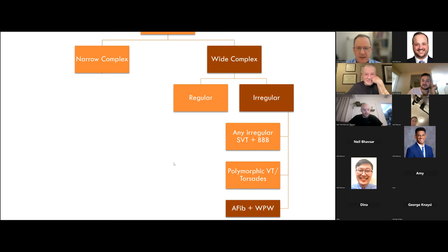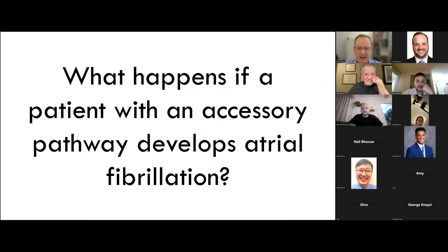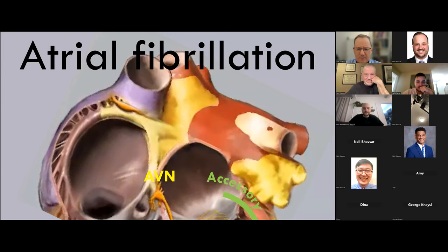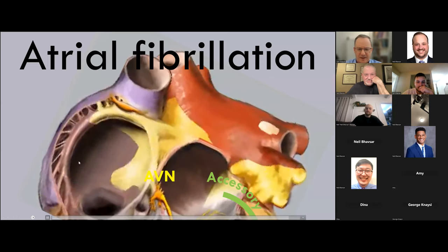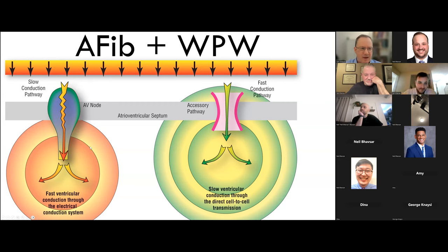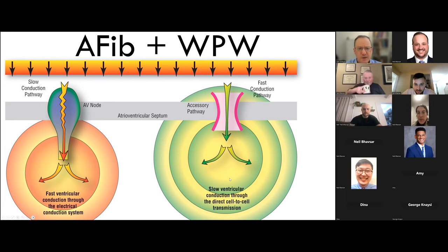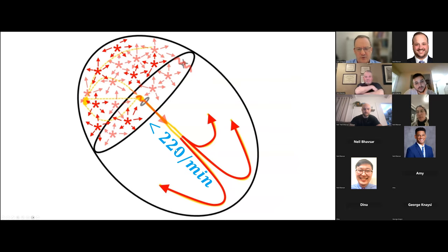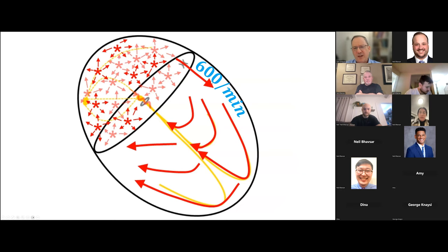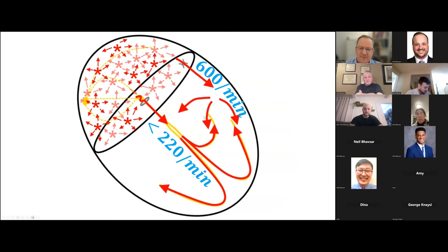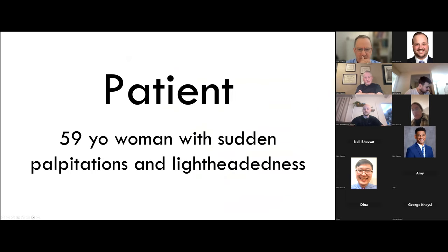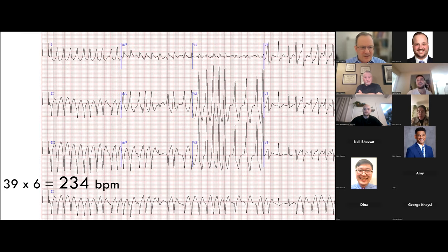What happens when a patient with an accessory pathway develops atrial fibrillation? You've got a fibrillatory wave at 400–600 bpm with two possible paths to the ventricle: the AV node, or the accessory pathway. Via the AV node it's slow through the node then fast through ventricular conduction tissue. Via the accessory pathway it's fast down the pathway then slow through cell-to-cell transmission. The AV node conducts up to about 220 bpm, but the accessory pathway can conduct up to 600 times per minute, creating the irregular QRS complexes you see.